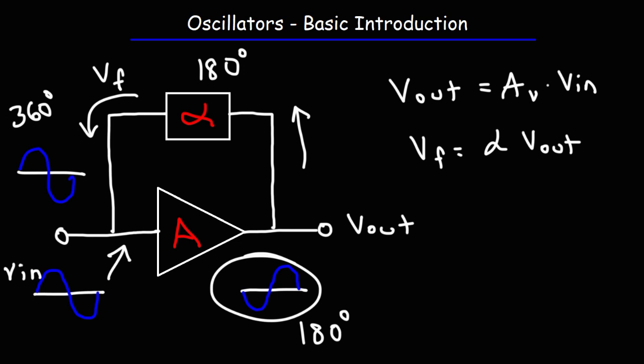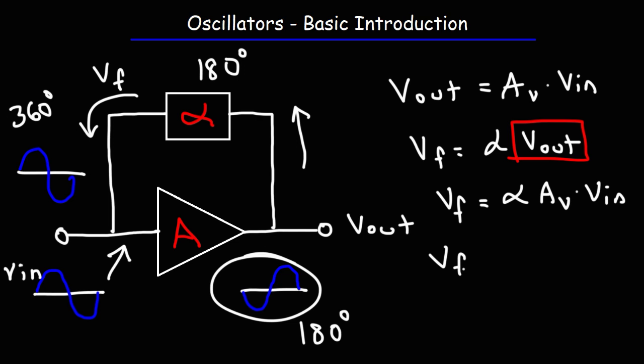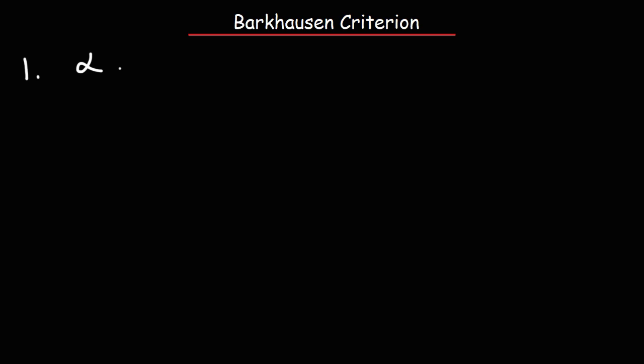Now we need to determine the loop gain of this circuit. If we replace the output voltage with what it equals, we get that Vf is equal to alpha times the voltage gain times the input voltage. So the ratio of the feedback voltage to the input voltage is equal to alpha times Av — the product of the attenuation factor and the voltage gain of the amplifier. In order for the oscillator to function properly, the attenuation factor times the voltage gain must equal one; this is known as the Barkhausen criterion, and the loop gain must equal one for sustained oscillations.